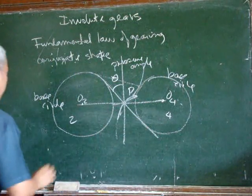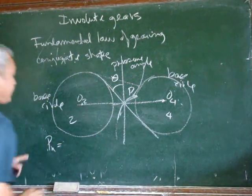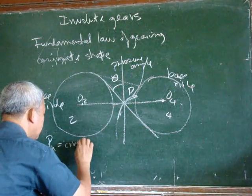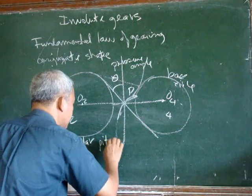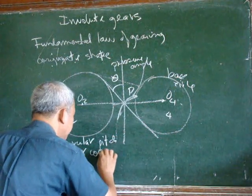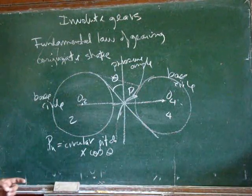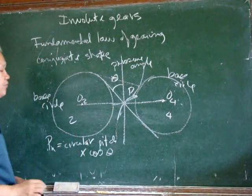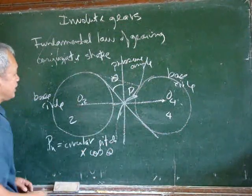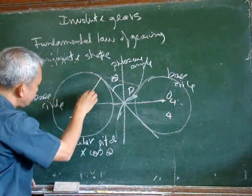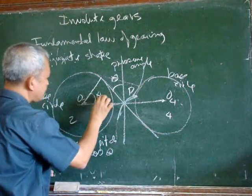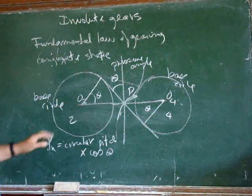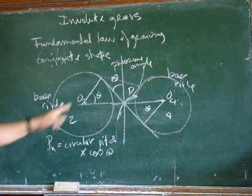A while ago we defined the normal pitch as the circular pitch multiplied by cosine theta. That cosine theta is this particular pressure angle, or the theta is equal to the pressure angle. We can also notice that this is also theta in the same way that this is theta, and they all refer to the same angle, the pressure angle.